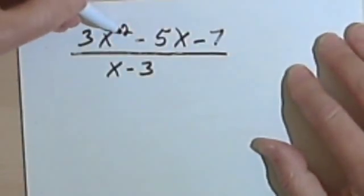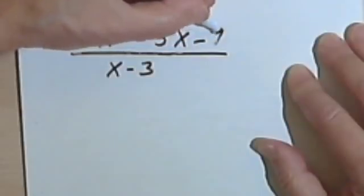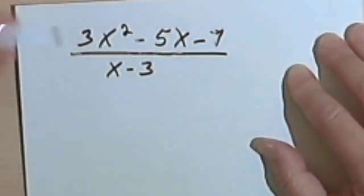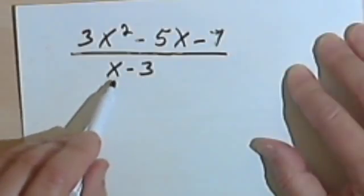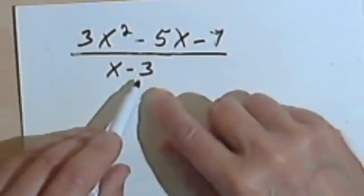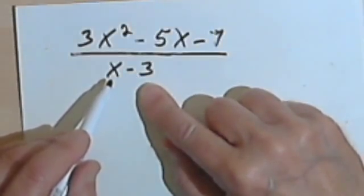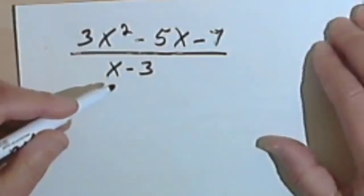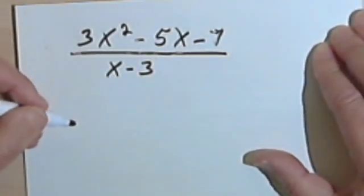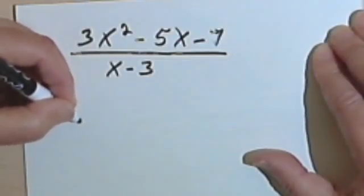So here's the first example. I've got 3x² - 5x - 7, and that's being divided by another polynomial, in this case a binomial, x - 3. And because this is not a monomial, I can't do anything as simple as dividing this into three fractions. What I've got to do is set this up like a long division problem that you may have learned when you were first learning long division in elementary school.